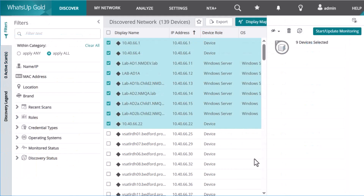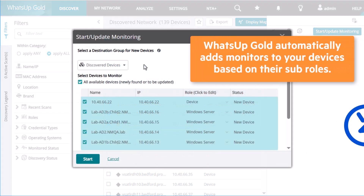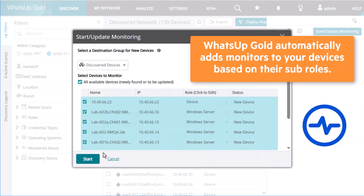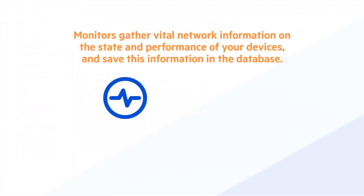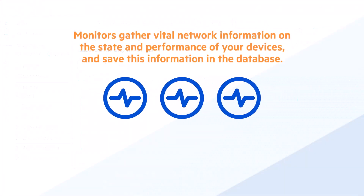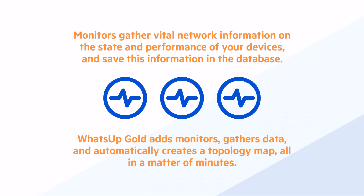Next, start monitoring your discovered devices. What's Up Gold automatically adds monitors to your devices based on their sub-role. Monitors gather vital network information on the state and performance of your devices and save this information in the database so you can report on it later. What's Up Gold adds monitors, gathers data, and automatically creates a topology map all in a matter of minutes.